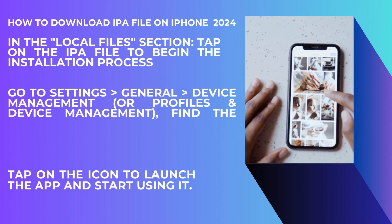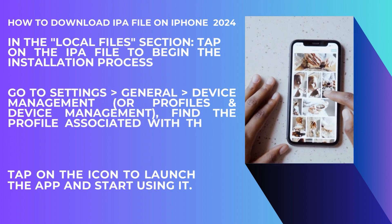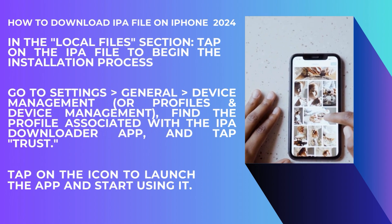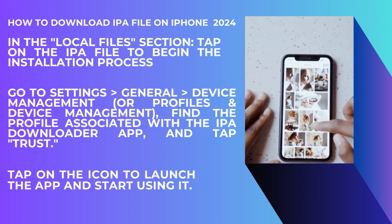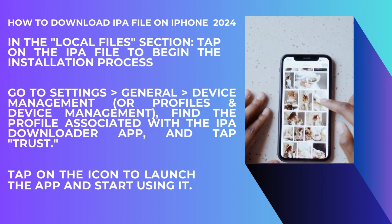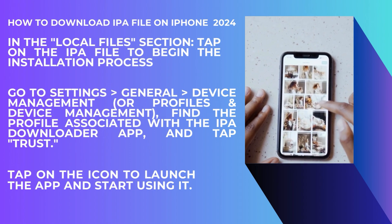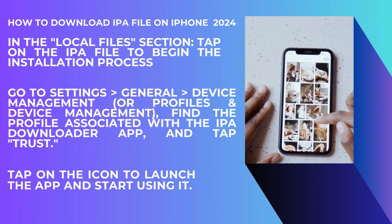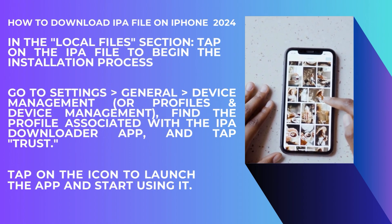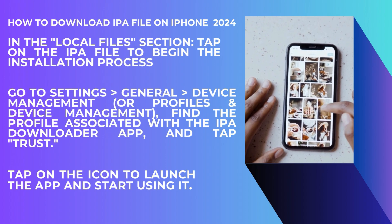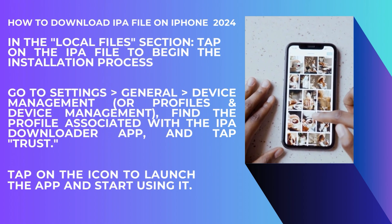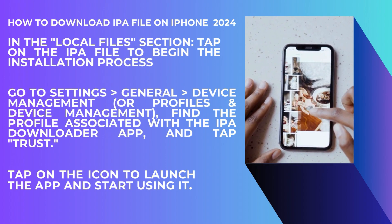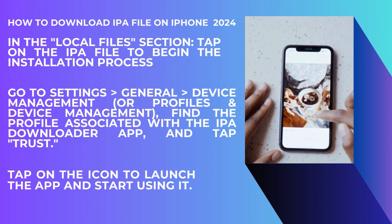Tap on the IPA file to begin the installation process. The app will guide you through a series of on-screen prompts. These prompts might include confirming that you want to install the file, accepting any necessary permissions, and entering your Apple ID credentials. Follow the prompts carefully to complete the installation.